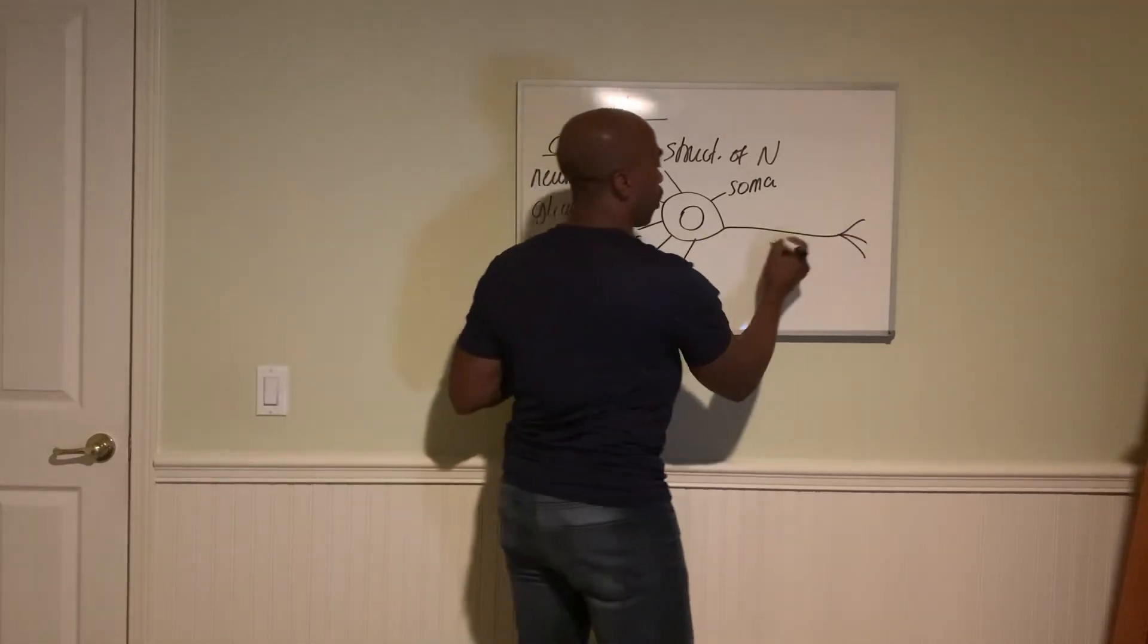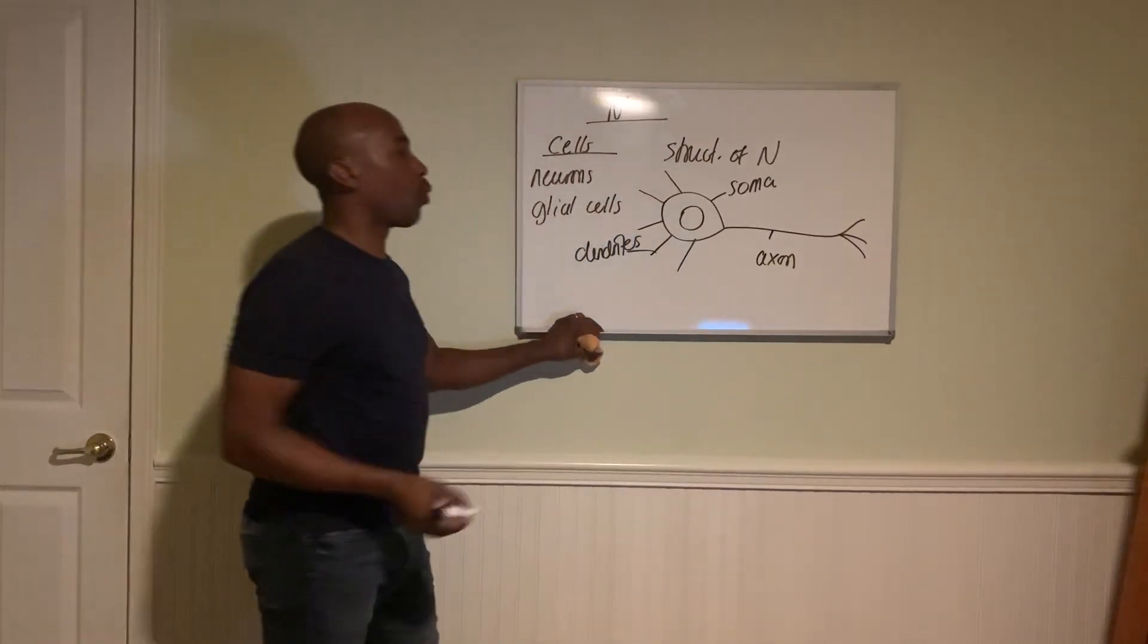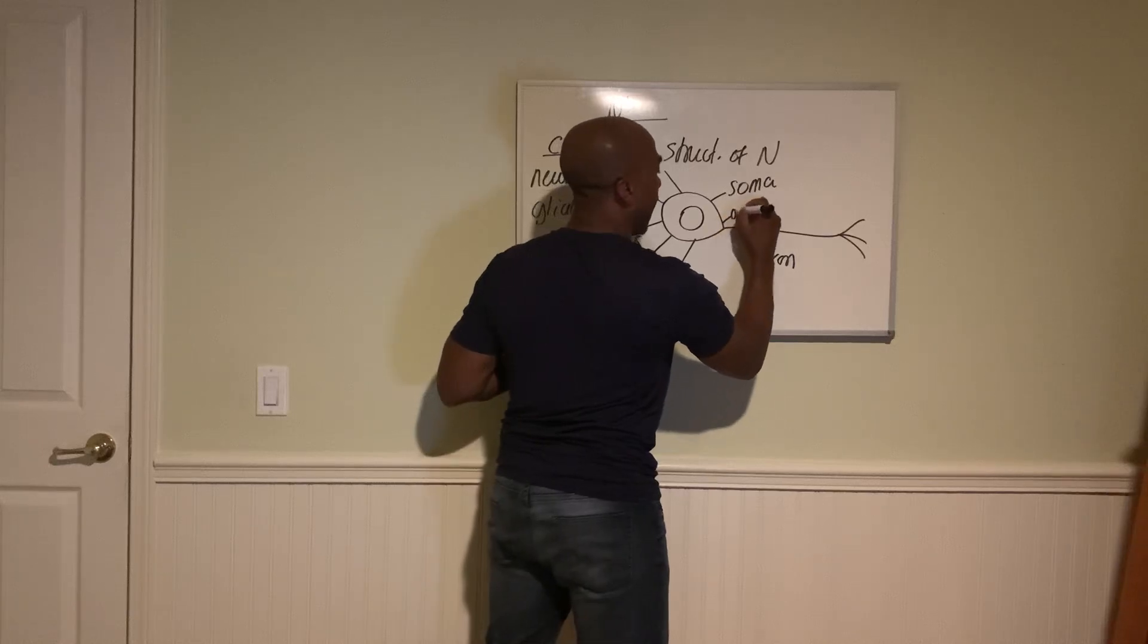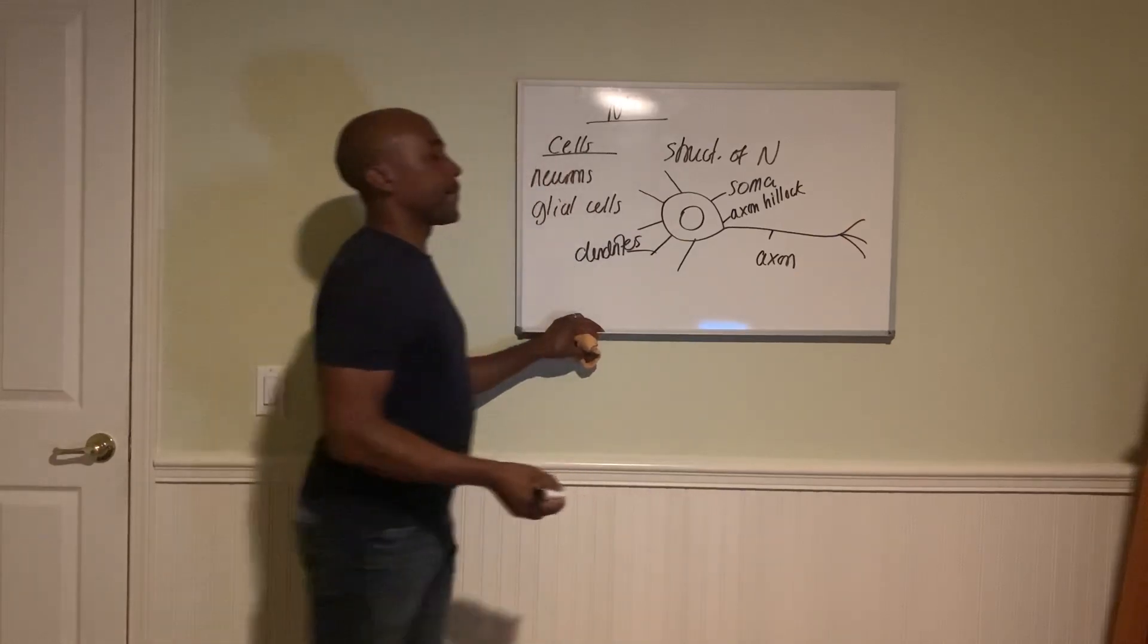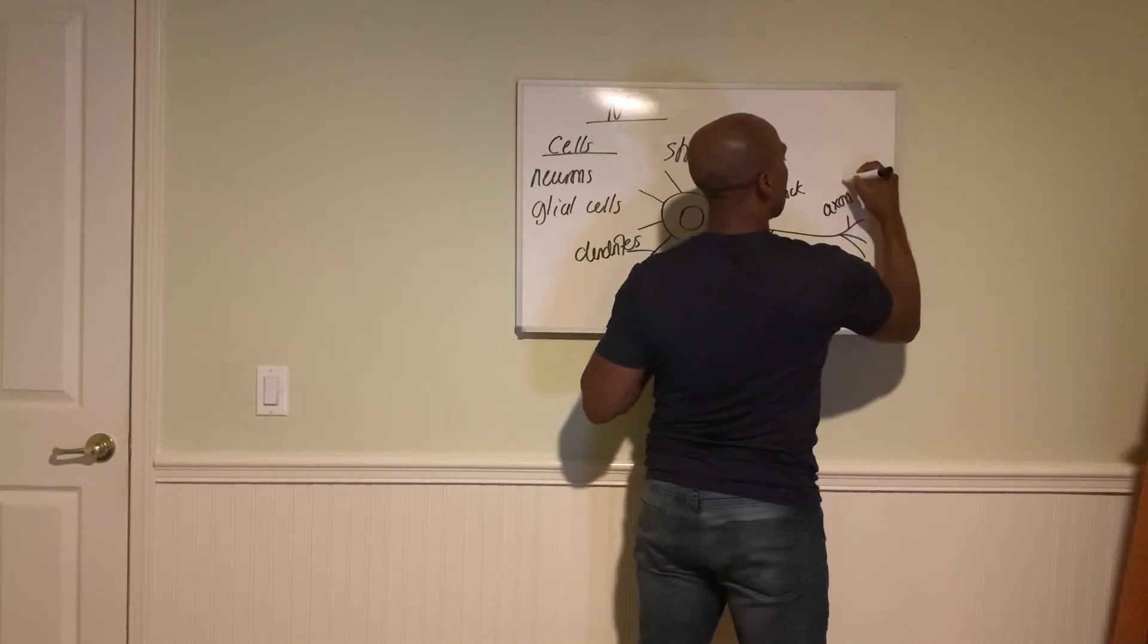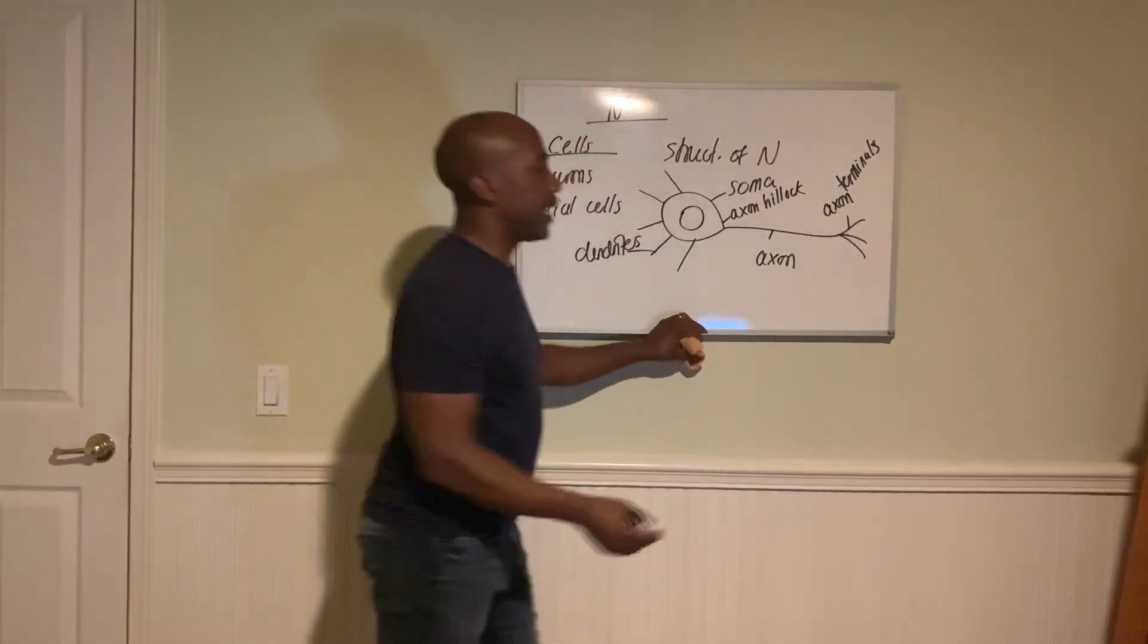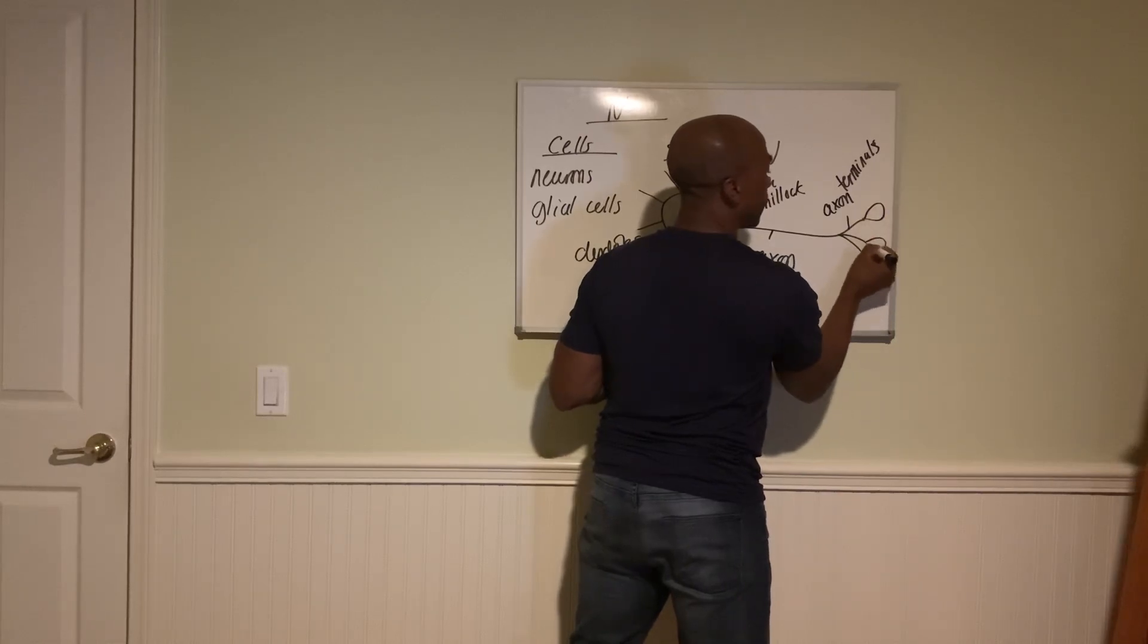And then we have this long process called the axon. Okay, now where the soma tapers to meet the axon, this area is called the axon hillock. Okay, and then at the end of the axon it branches into these things called axon terminals. And at the end of the axon terminals you have these ends, these knobs that we call your synaptic knobs.